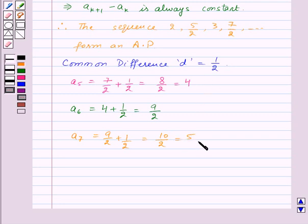So, here we have found the next three terms and thus, the answer to this question is, yes, the sequence forms an AP, the common difference D is equal to 1 by 2 and the three more terms are 4, 9 by 2 and 5.